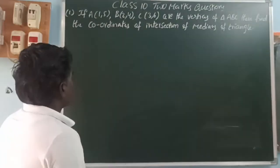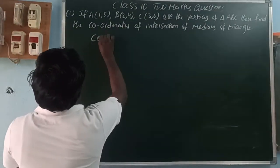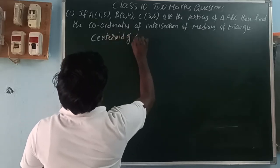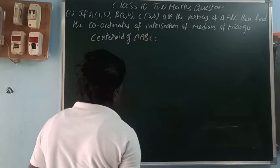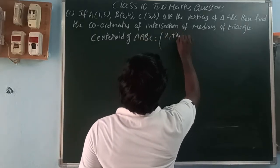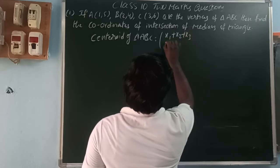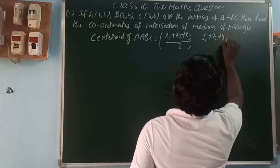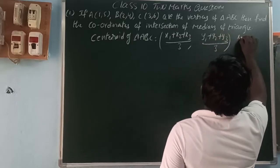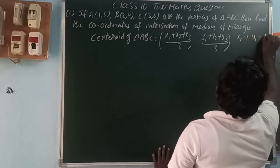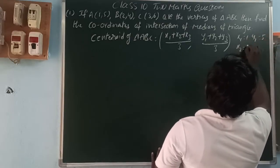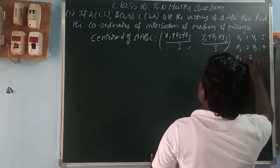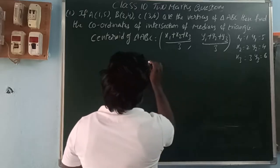The centroid of triangle ABC is given by the formula: (x1 + x2 + x3)/3, (y1 + y2 + y3)/3. Here x1=1, y1=5, x2=2, y2=4, x3=3, y3=6.